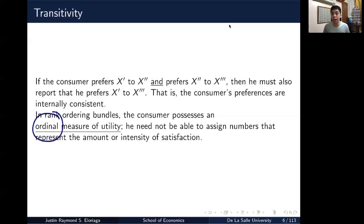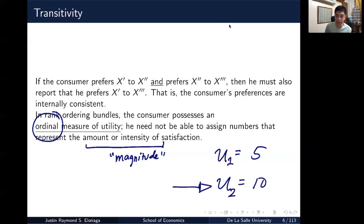Note, this is a key concept which I will stress in the class. The measure of utility is a mere ordinal measure. He need not be able to assign numbers that represent the amount or intensity of satisfaction. So the utility measure that we will compute generally in this class doesn't imply magnitude. So say I have a utility value of 5 and a utility value of 10. So this is associated with bundle 2, this is with bundle 1. Then I can say that I would more likely prefer the second bundle over the first bundle because it gives a higher utility. And that's all I can say about it. I cannot say that I prefer bundle 2 twice as much as bundle 1 because 10 is double 5. That is not the case.